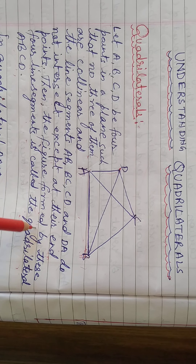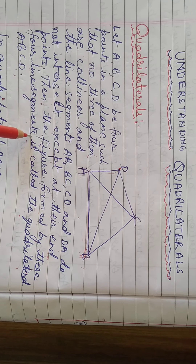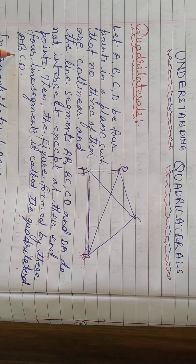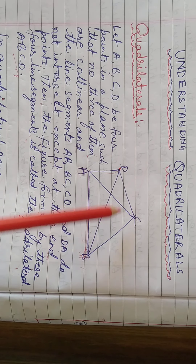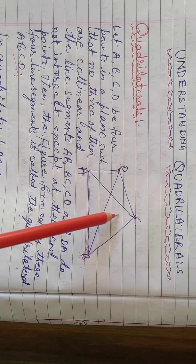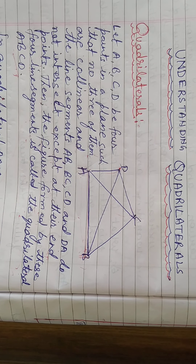Then the figure formed by these four line segments is called the quadrilateral ABCD. So this is the definition of quadrilateral.